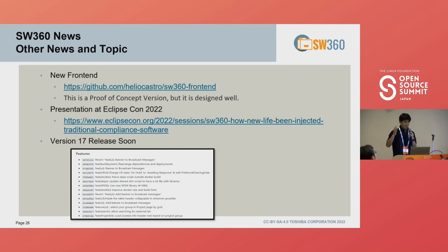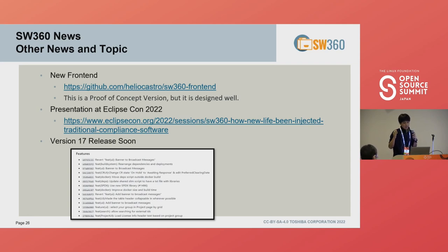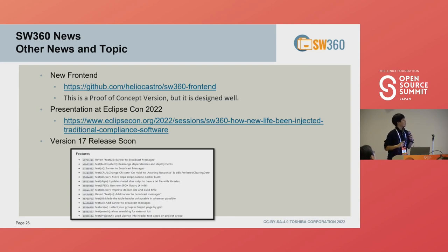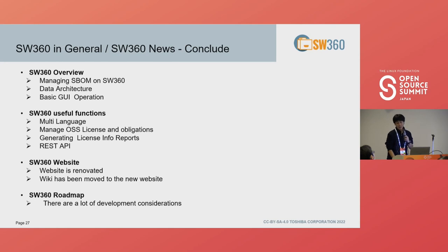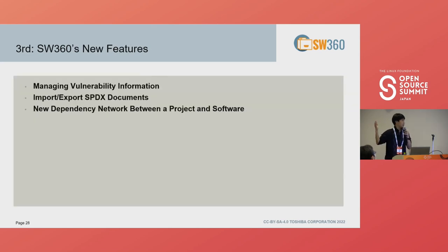As our topic mentions, we are also discussing a new front-end. It's a concept for now, but we may change to a new front-end. We will also probably release version 17 soon. That covers the SW360 overview, useful functions, website, and roadmap. From now, my colleague Tien will explain new functions in SW360.